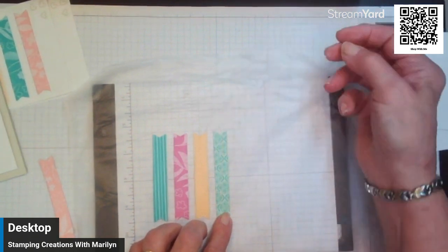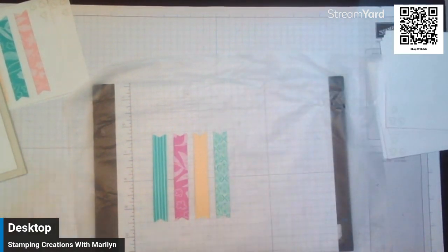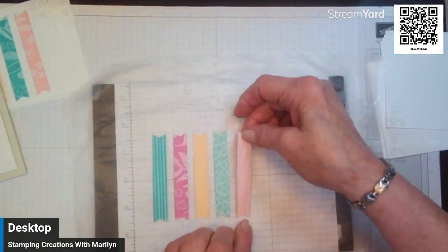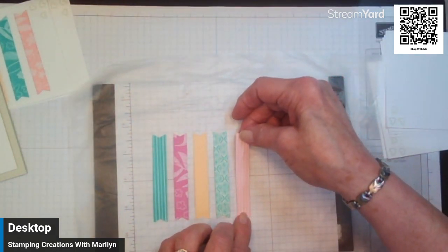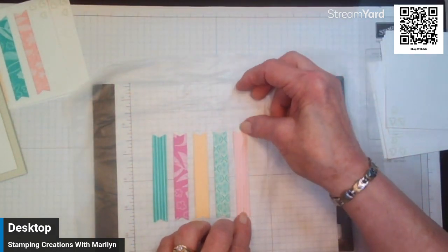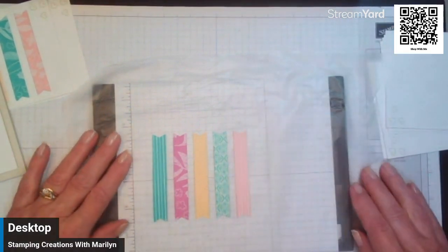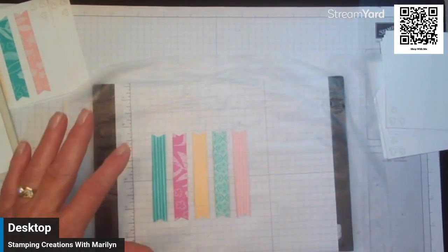Green one. These are all the In Colors if you haven't guessed, from 2024 to 2026. I am in a swap where we were to use In Colors and this is my design. And so there are my pieces lined up like I want them.